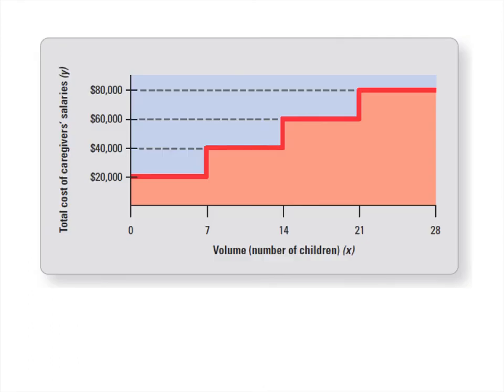This is what a relevant range of data would look like on a graph. We can say with confidence that between 0 and 7 units or volume, whatever we're producing, in this case it looks like it's number of children, so it must be a daycare, our fixed costs are $20,000. However, beyond that relevant range, fixed costs can change. So between 7 and 14, our fixed costs are $40,000.